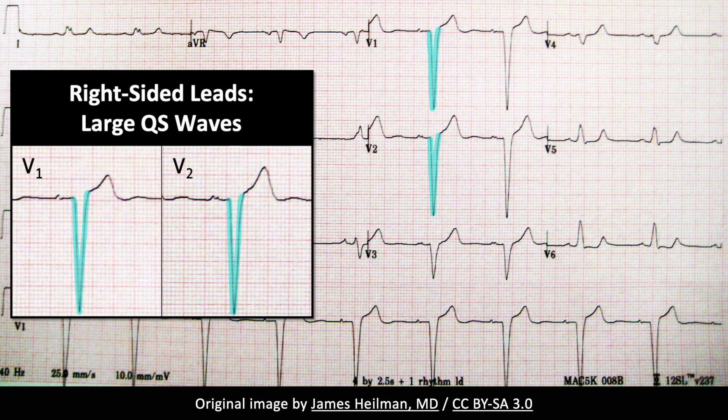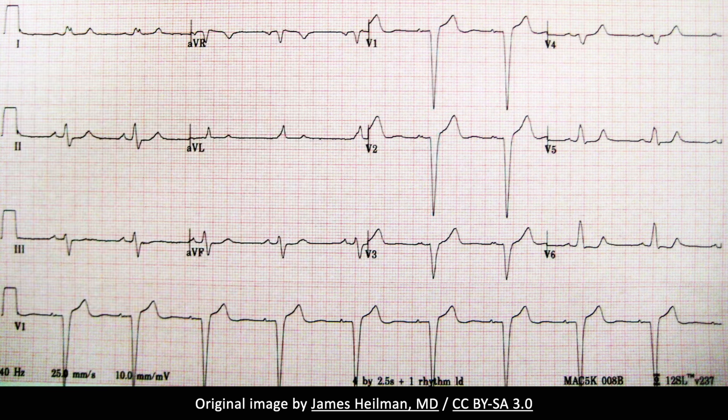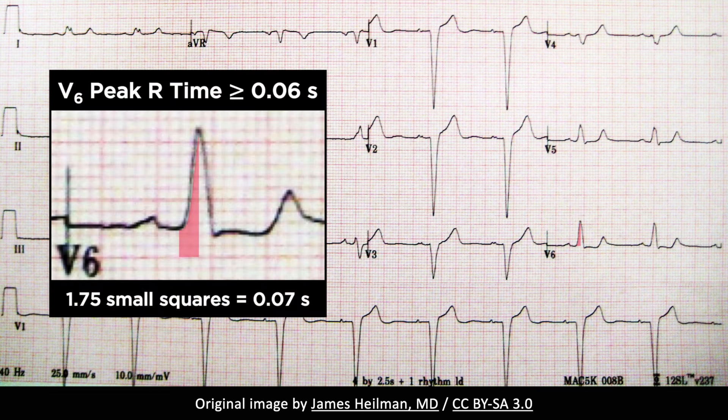The QRS complexes in right-sided leads consist of a deep and wide negative deflection. Another important finding is that of a prolonged peak R time in leads V5 and V6 — that is, greater than 60 milliseconds — but normal in leads V1 to V3, in which it may not be discernible due to the lack of R waves.